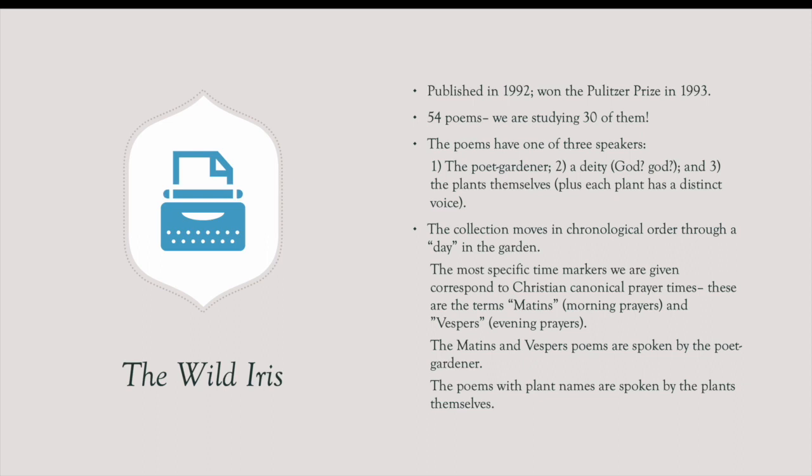When we're thinking about the Wild Iris itself, this actual collection that we will be looking at, it was published in 1992. It won the Pulitzer Prize in 1993. As a whole, it has 54 poems. We are studying 30 of those poems. Things that you should know as you go into your reading of this collection, is that the poems have one of three speakers. The speaker is either going to be the poet gardener, the speaker might be a deity or the deity. It's really only one that is used as a speaker. You can see here on the notes that I have God with an uppercase and then God with a lowercase because it is not necessarily specified whether we are talking about a Christian God, whether we are talking about one of many in a pantheon of gods, whether we're talking about nature or the earth itself. We don't know. It's just some sort of higher power deity type person. That's one of the other speakers.